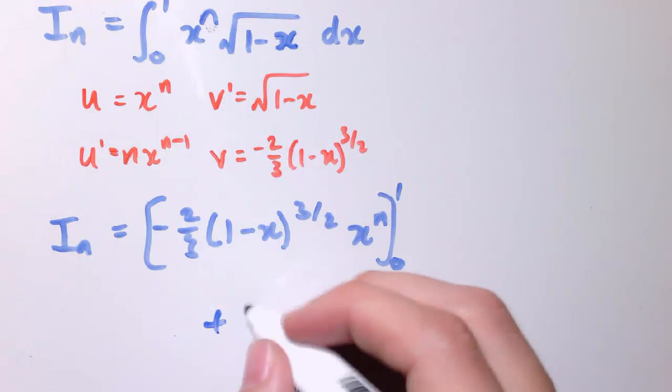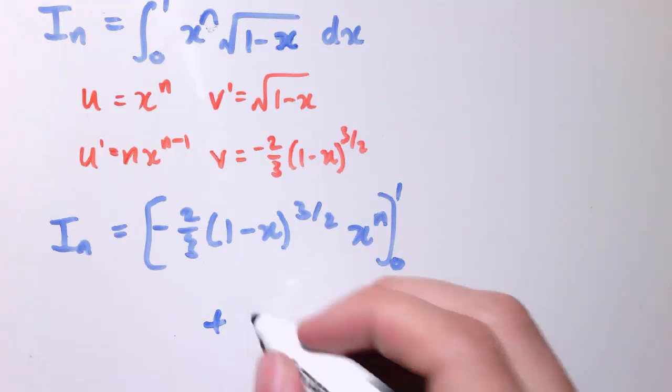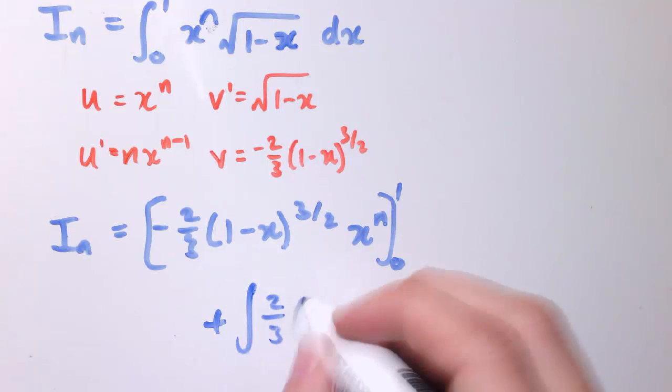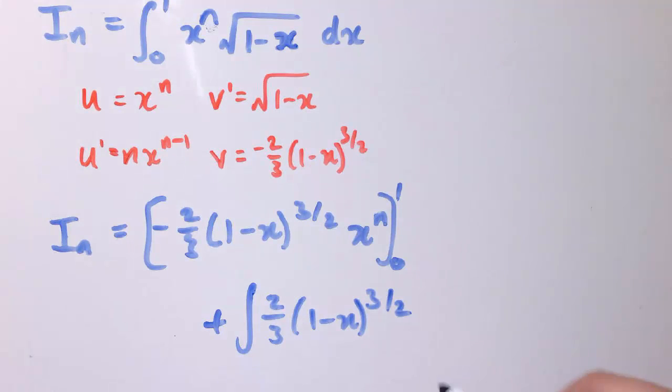And then minus the integral of this times x to the n minus 1, so we've got minus, and it's a minus here as well, so plus the integral of 2 thirds, 1 minus x to the 3 over 2 times nx to the n minus 1 dx.